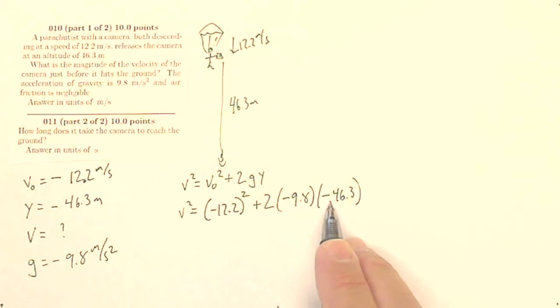Now you can see this negative squared will give me a positive, this is positive, and these two negatives will give me a positive. So whatever this is plus whatever this is is going to be an even bigger number. So my velocity is going to be the square root of all of that.